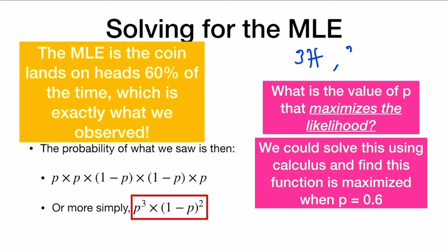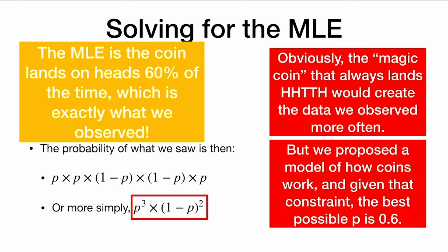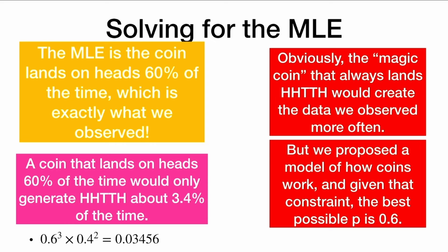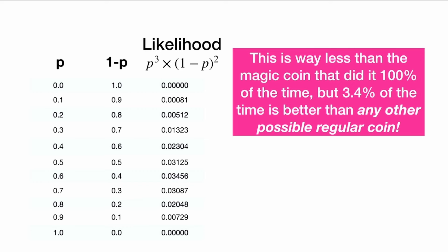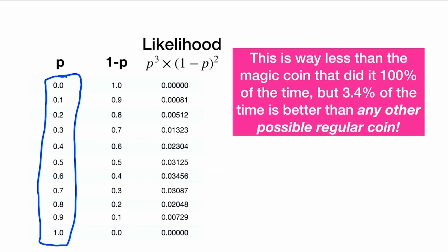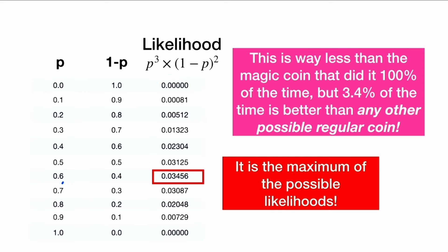We saw three heads and two tails. So obviously, the magic coin that always lands heads, heads, tails, tails, heads would create the data we observed more often. But we proposed a model of how coins work, and given that constraint, the best possible p is 0.6. If we plug in our estimate of p, we find that if the coin lands on heads 60% of the time, the probability of observing heads, heads, tails, tails, heads is 3.4%. That is way less than the magic coin's 100%, but 3.4% is better than any other possible regular coin. We can see a table of all possible p values, and at p equals 0.6, the likelihood is the maximum.